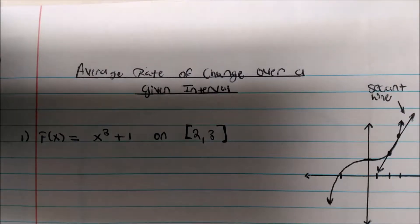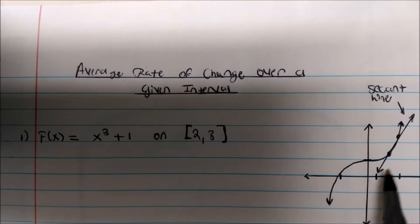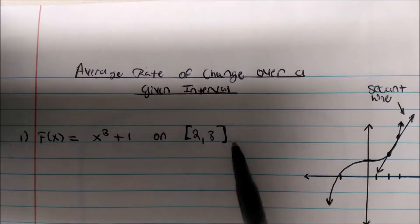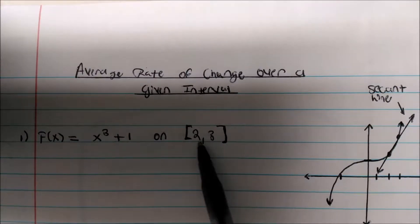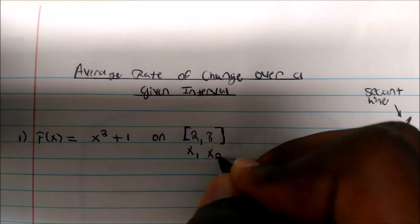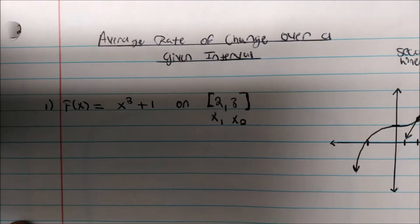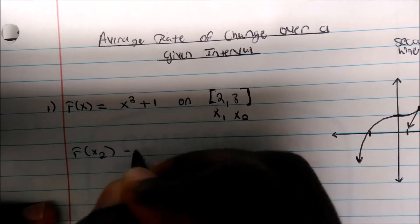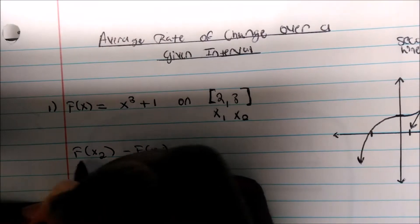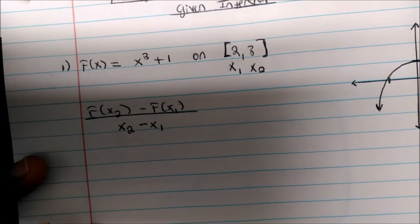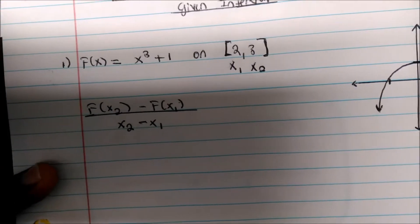We're going to talk about the average rate of change on two given points. The average rate of change is independent of y — instead of viewing this as x1, y1, this will be x1, x2. The formula says: the function of x2 minus the function of x1, divided by x2 minus x1.